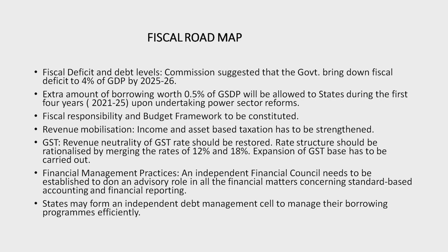The Fiscal Roadmap — Fiscal Deficit and Debt Levels: the Commission suggested that the centre bring down the fiscal deficit to 4.4% of GDP by 2025-26. For states, it recommended the fiscal deficit limit as 4% in 2021-22, 3.5% in 2022-23, and 3% during 2023-26. If a state is unable to fully utilise the sanctioned borrowing limit during the first 4 years, it can avail the unutilised borrowing amount in subsequent years.